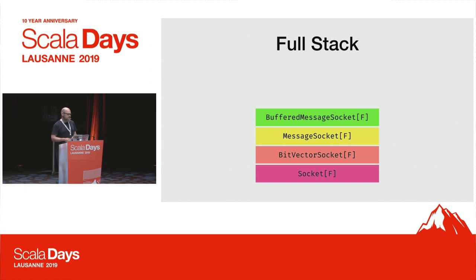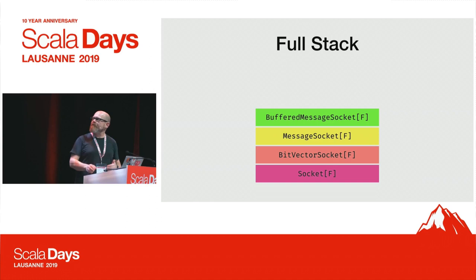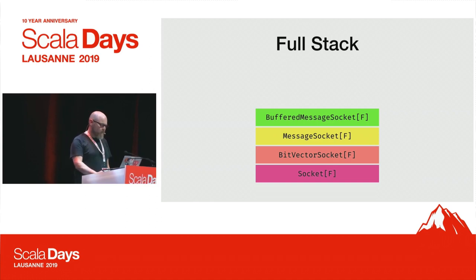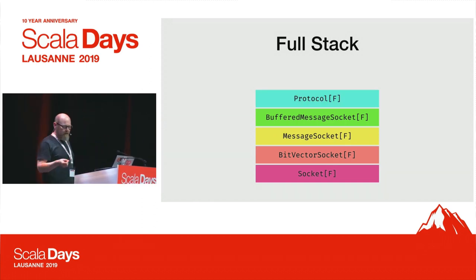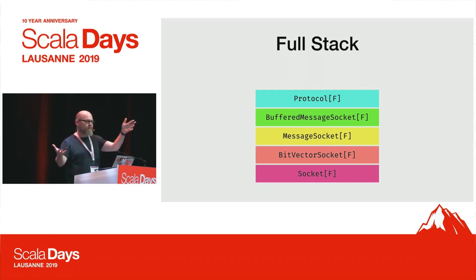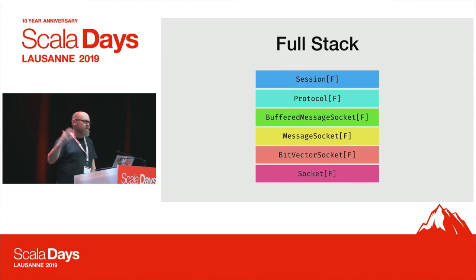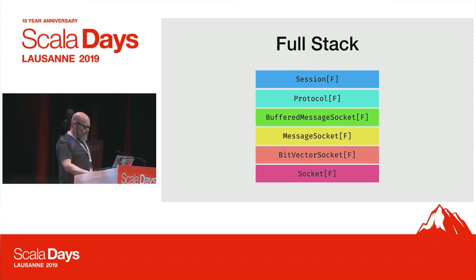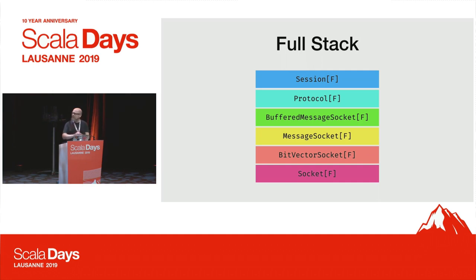Let me talk about the whole stack we've got. At the very bottom we've got Socket from FS2, which abstracts away the TCP stuff. Above that is our BitVectorSocket that abstracts away byte arrays. MessageSocket abstracts away the BitVectors. BufferedMessageSocket is interesting — it deals with asynchronous messages, because Postgres can send you messages that are not in response to anything you've done. Cats Effect Concurrent is really important here. On top of that there's a Protocol that abstracts out all these message exchanges and turns them into atomic operations, and at the very top there's a Session object which is the high-level API that people use.